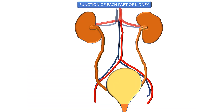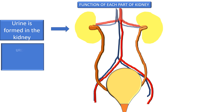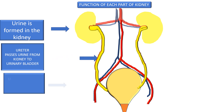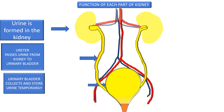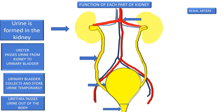Now let us see the function of each part. Urine is formed in the kidney. The ureter passes urine from the kidney to the urinary bladder. The urinary bladder collects and stores urine temporarily. The urethra passes urine out of the body. The renal artery supplies blood to each kidney. The renal vein takes deoxygenated blood from the kidney.